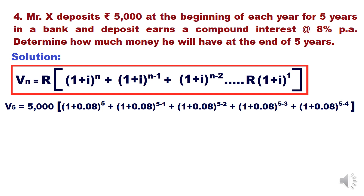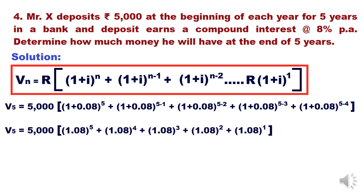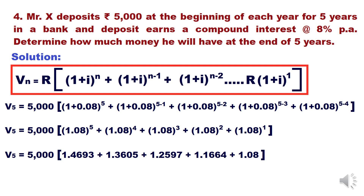Instead of writing 8/100 we write 0.08 directly. So we have (1.08)^5 + (1.08)^(5-1) + (1.08)^(5-2) + (1.08)^(5-3) + (1.08)^(5-4), giving us five values for five deposits. The factors are 1.4693, 1.3605, 1.2597, 1.1664, and 1.08 — which can also be found using the future value table from video one. Summing these gives 6.3359. So 5,000 × 6.3359 = 31,680 rupees, which is the future value.